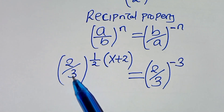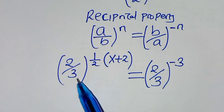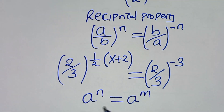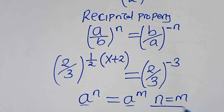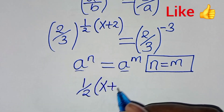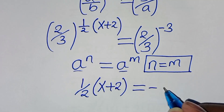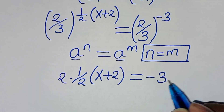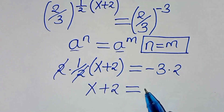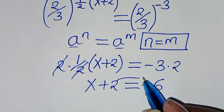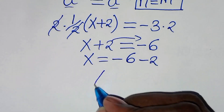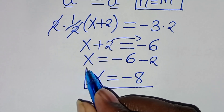Now we have a base of 2 over 3 on both sides. Since the bases are common, using the property that if a to the power of n equals a to the power of m then n equals m, we equate the exponents: one half times (x plus 2) equals negative 3. Multiplying both sides by 2, we get x plus 2 equals minus 6. Taking 2 to the right-hand side, x equals minus 6 minus 2, so x equals minus 8.